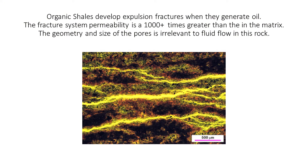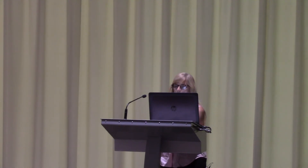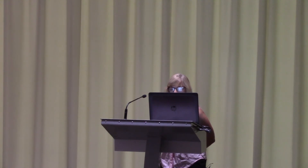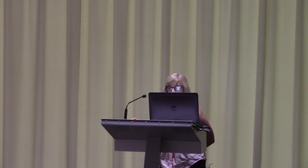Also, thinking of fluid flow, this is a picture of the Bakken shale — an organic shale. These are expulsion fractures within the shale. These fractures are generated as the oil is generated. This is providing the permeability of the system. The matrix itself surrounding these fractures is not going to provide your permeability for this system. The system's permeability comes from this fracture network. You can imagine the flow coming through all these interconnected micro-fine fractures.